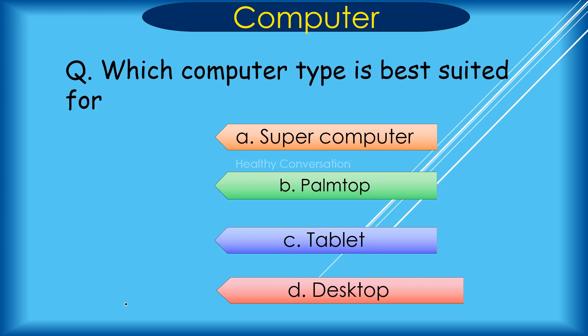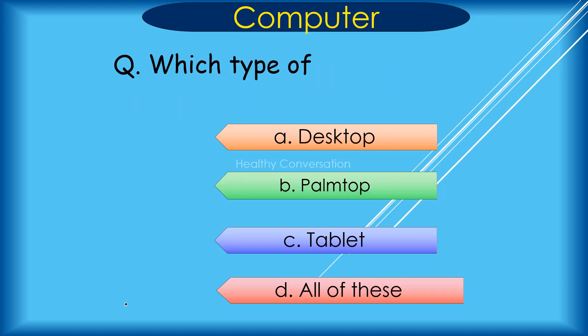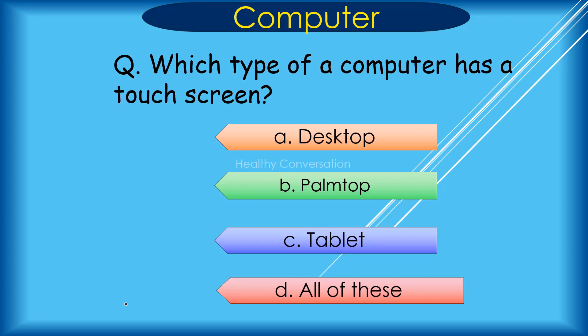Which computer type is best suited for an airport office? A. Supercomputer, B. Palm top, C. Tablet, D. Desktop. Correct answer is A. Supercomputer. Question about computer parts: A. Desktop, B. Palm top, C. Tablet, D. All of these. Correct answer is D. All of these.